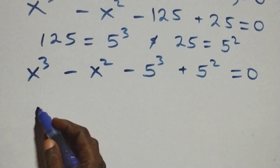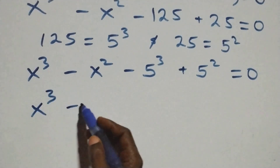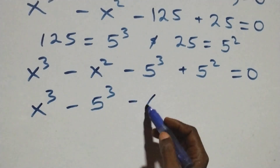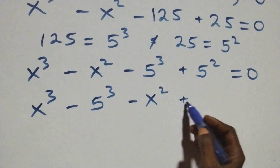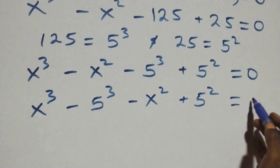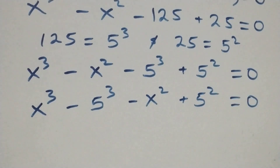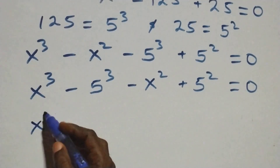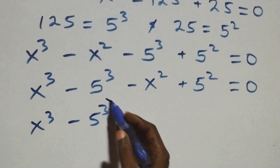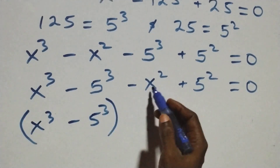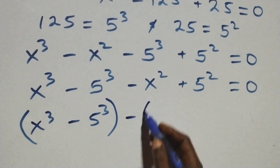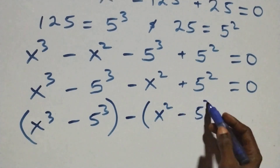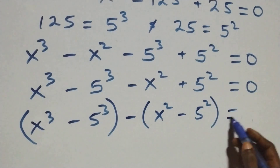We group the terms: we have x cubed minus 5 cubed, and combining the squared terms we have minus x squared plus 5 squared equals zero. We can factor out a minus sign: (x cubed minus 5 cubed) minus (x squared minus 5 squared) equals zero.